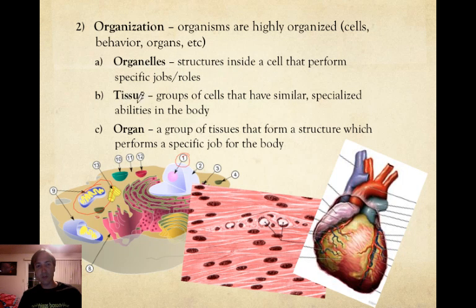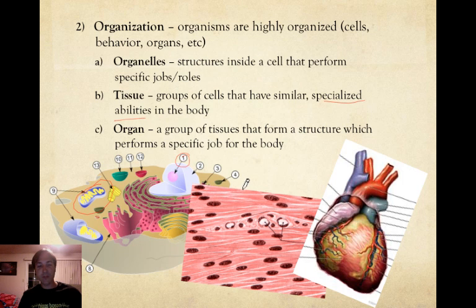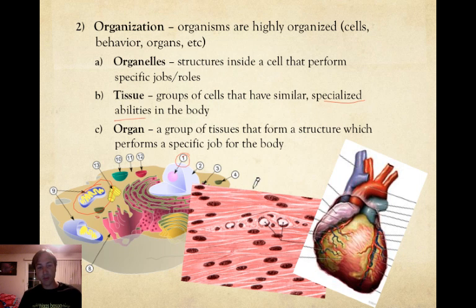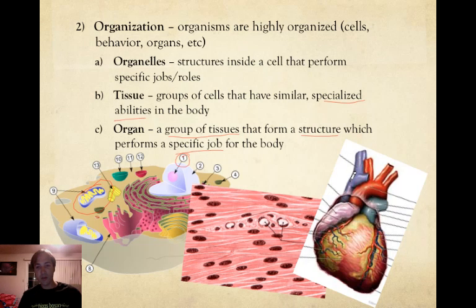The second example of organization is tissue — groups of cells that all have similar specialized abilities. Here's one example: this is smooth muscle tissue, like the muscle around your stomach or intestines that helps move your food throughout your body. Muscle tissue has the ability to contract — that's a specialized ability. All these cells work together to contract for a specific job in the body. The third example of organization is organs. When we take multiple types of tissues and form a structure that performs a specific job for the body, that's an organ. For example, the heart is made up of muscle tissue, nervous tissue, and multiple different types of tissues working together to pump blood throughout the body.